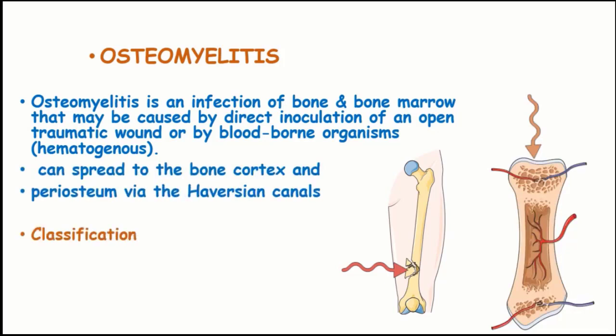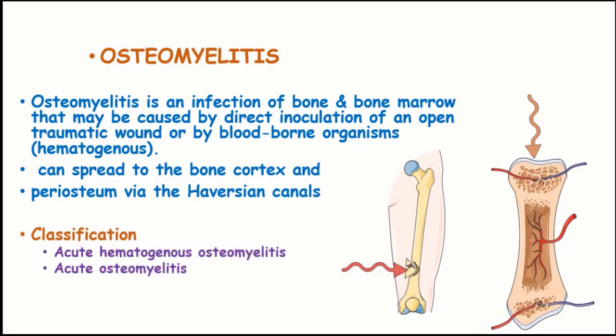Osteomyelitis can be classified into four classes: acute hematogenous osteomyelitis, acute osteomyelitis, chronic osteomyelitis, and subacute osteomyelitis.